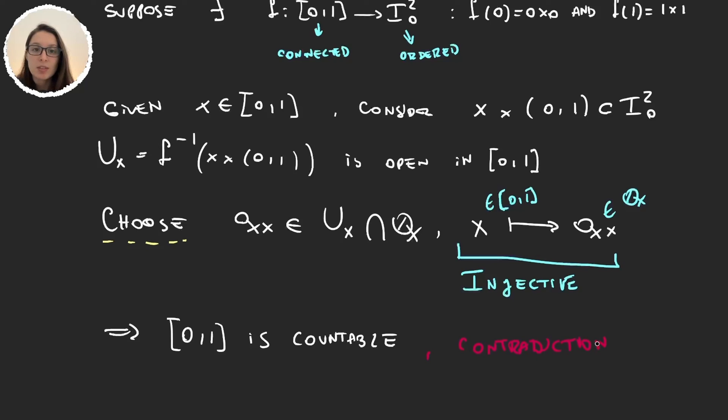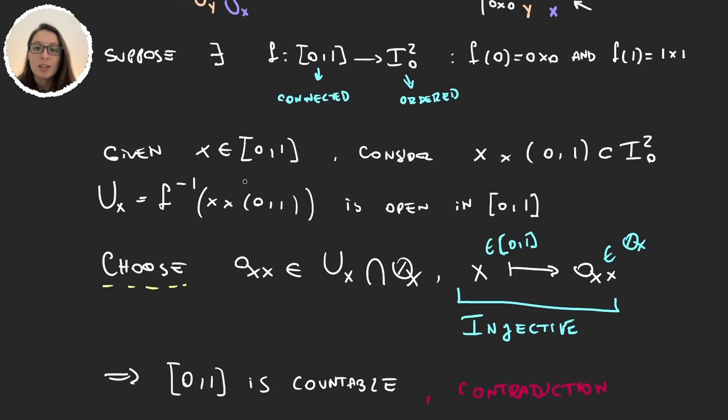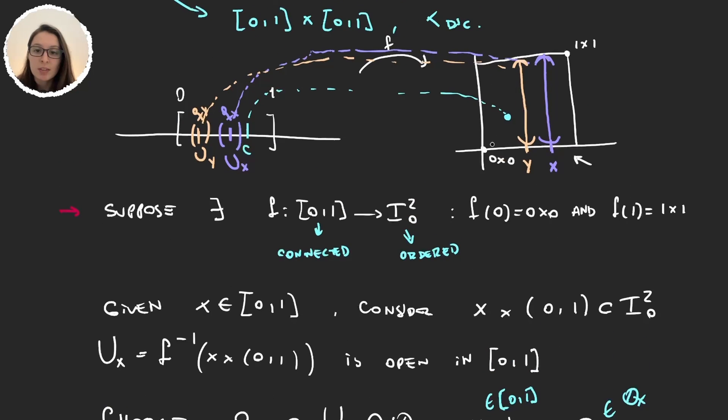And where did this contradiction come from? It came from supposing that I could connect (0,0) to (1,1) with a continuous function. So it is very crazy but yes we cannot join these two elements with a continuous function.